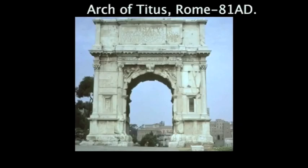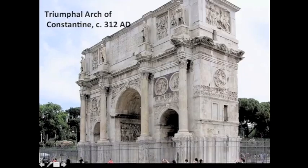Here is the Arch of Titus — poor Titus had a little runt of an arch — and this is the Arch of Constantine, very late, really toward the very end of the Roman Empire, but still building triumphal arches.